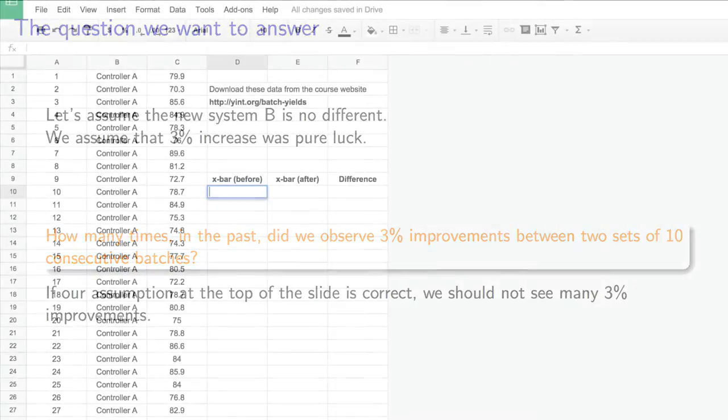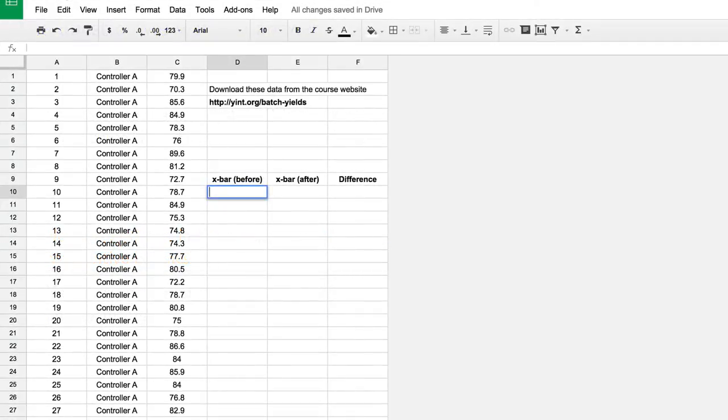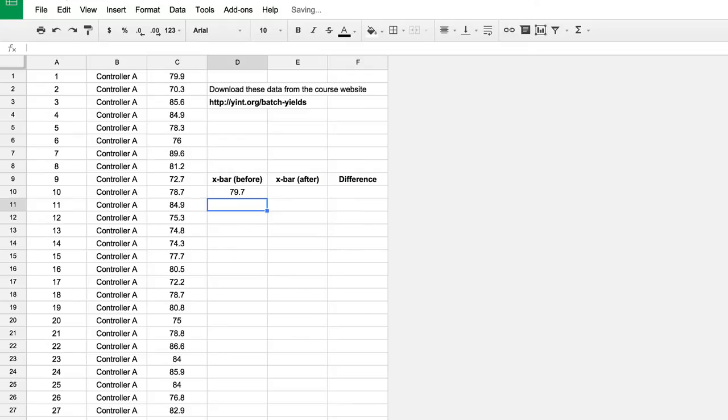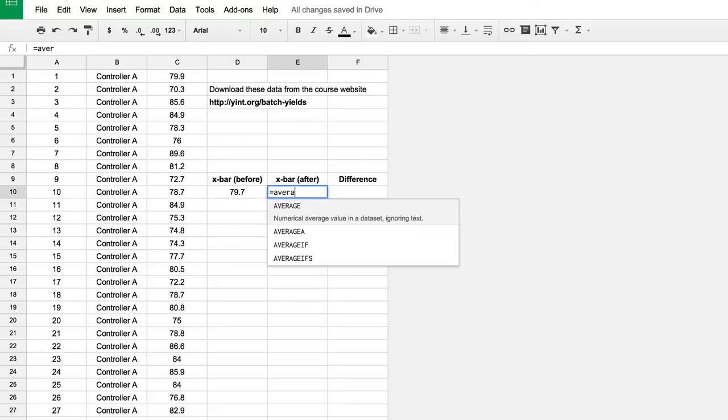Let me show you this on a spreadsheet. Divide the 300 data points into small consecutive groups of 10 samples, followed by another 10 samples. Calculate the average of the first 10 and the average of the following 10.